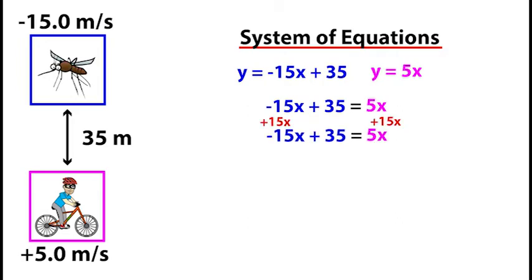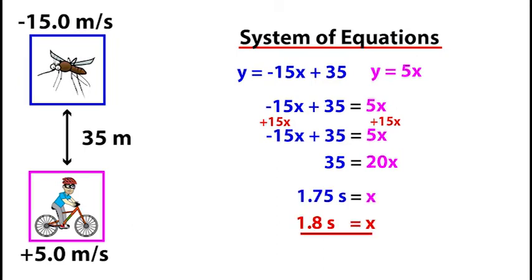I've got negative 15x plus 35 equals 5x. I'll add 15x to both sides, getting 35 equals 20x, and I'll divide both sides by 20 to get the value of x as being 1.75. Once I round it to two significant digits, that gives me a time of collision of 1.8 seconds.